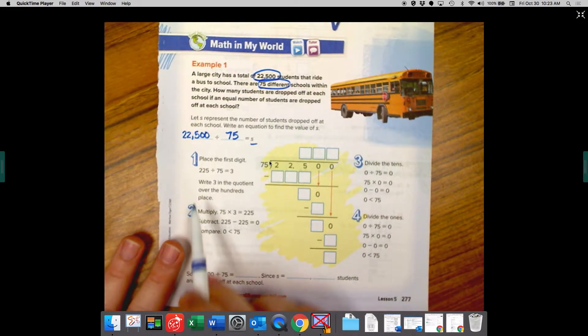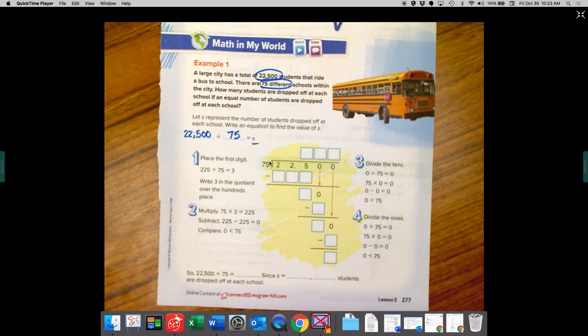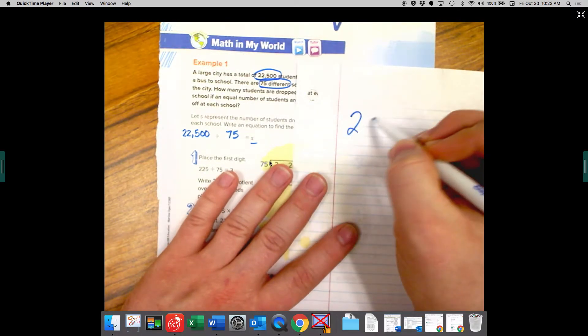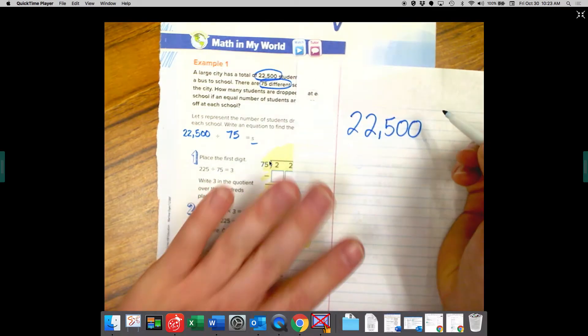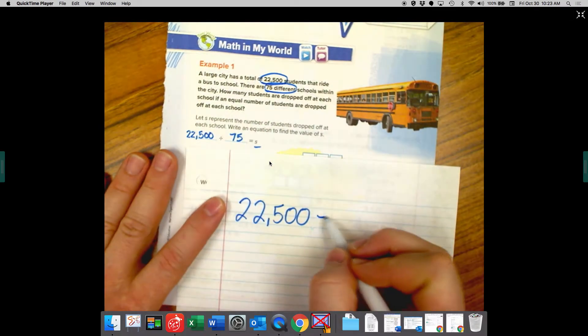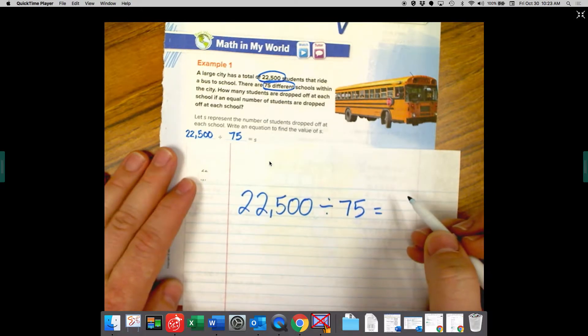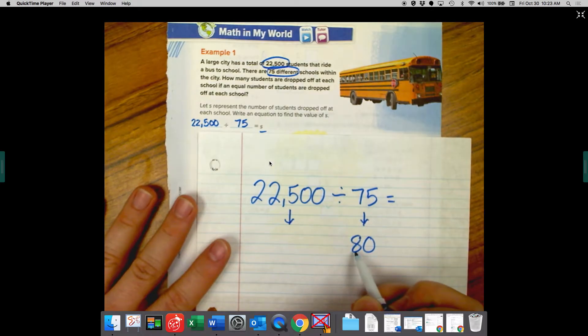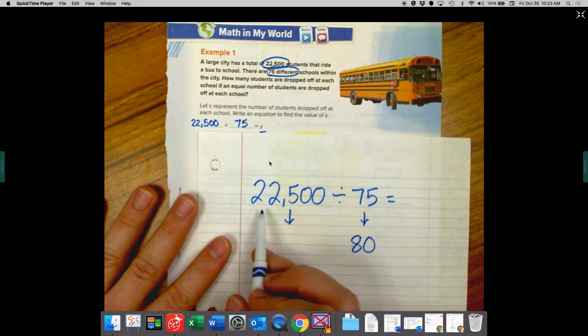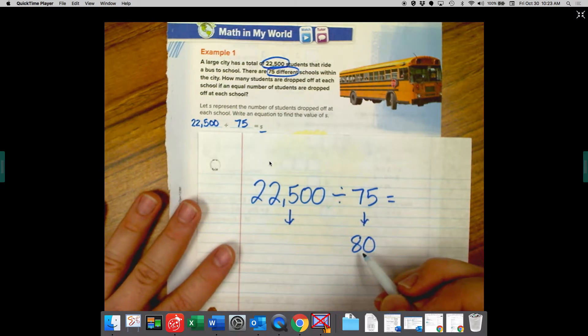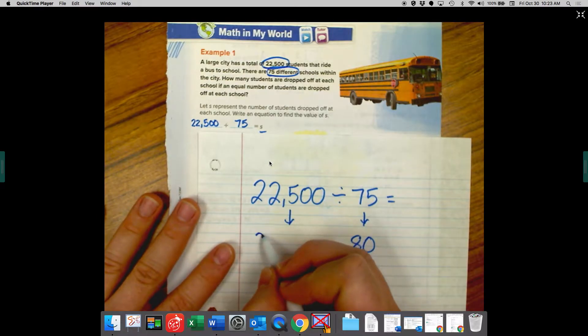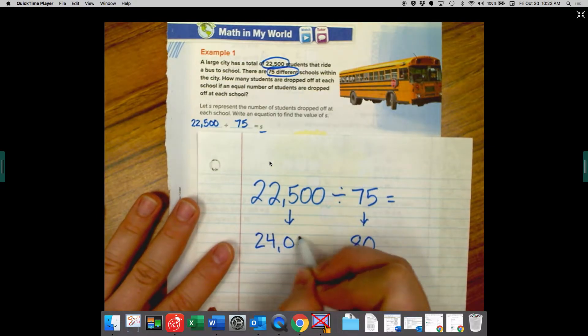So before we even get into how to do it this way, I like to do a quick estimate so that I know what number I should be looking for. So if I want to rewrite this problem, 22,500 divided by 75 equals s. So I'm going to estimate, I'm going to change this to 80 and I'm going to think of a compatible number that's really close to 22. Well 8 times 1, 8 times 2 is 16, 8 times 3 is 24. So I could round this or estimate to 24,000.